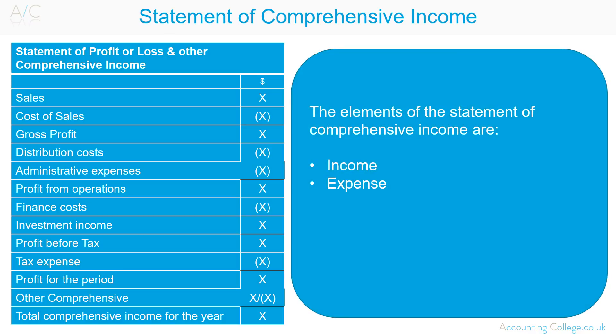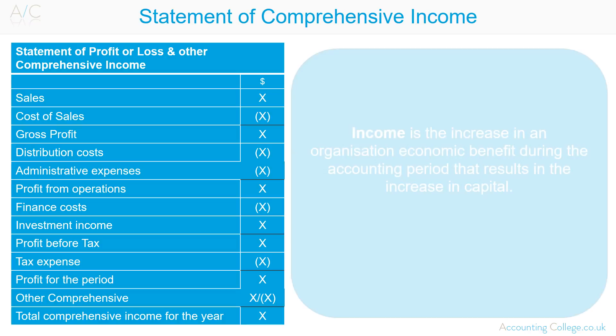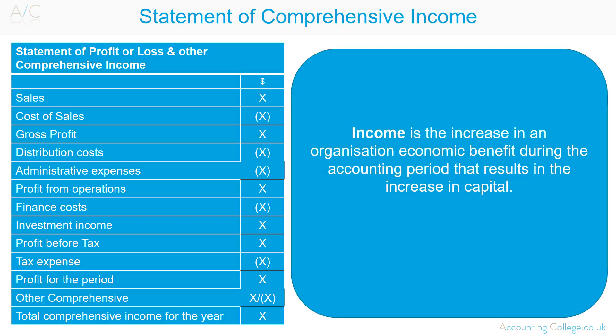The elements of the Statement of Comprehensive Income are income and expense. Income is the increase in an organisation's economic benefit during the accounting period that results in the increase in capital. This can be in the form of direct inflows of cash, enhancements of assets, or in the decrease of a liability.